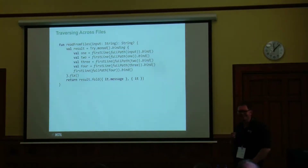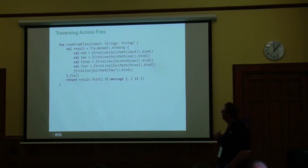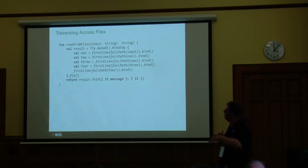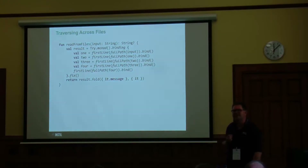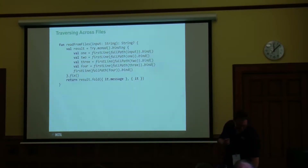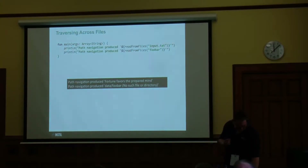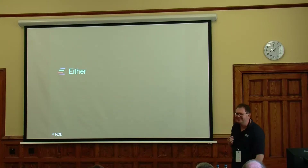Here's how we'd use our monadic composition. We'd say: read the first line of the first file — that returns one; then go to that file and read its first line — that gives you two; and keep going until we get to the end. What we get back is a Try — either a Success or a Failure — and we can use a fold to handle the two cases. You see, it's the same trick over and over again. But this time he's a fighter pilot, pretty good fighter pilot.